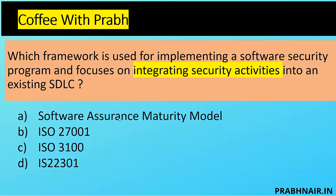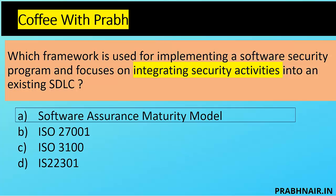Next coffee shot: Which framework is used for implementing a software security program and focuses on integrating security activities into the existing SDLC? Option A — SAMM, the Software Assurance Maturity Model — is a framework that introduces security practices through approximately 11-12 practices covering all security parameters in the SDLC. ISO 27001 is about ISMS implementation; ISO 31000 is enterprise risk management; ISO 22301 is BCMS. The only correct option is SAMM — the answer is A.